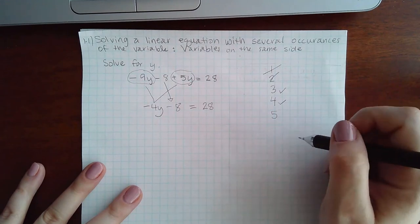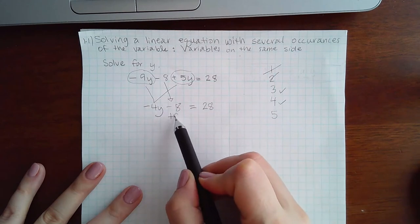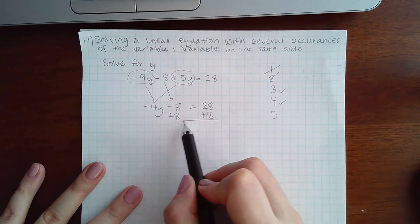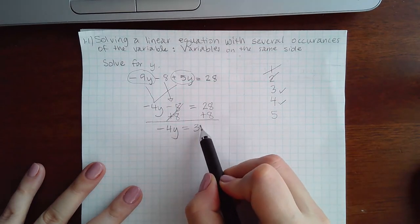Step five is to move the constant terms to the other side. So this 8 needs to move over to the other side. To do that, we're going to use the opposite sign, add 8 to both sides. That gives me 36.